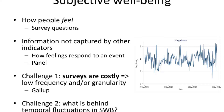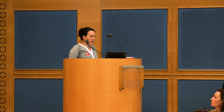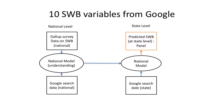The other challenge is that we would like to know more about what's behind the fluctuations in subjective well-being. So what this project is going to do is try to solve both of these issues. We take 10 subjective well-being variables from Gallup, build a model to explain the fluctuations in that subjective well-being data using Google searches, then apply that model to the state level using Google search data to obtain a panel data set at the state level. Then I'll show you what sorts of things that panel data set can be used for.